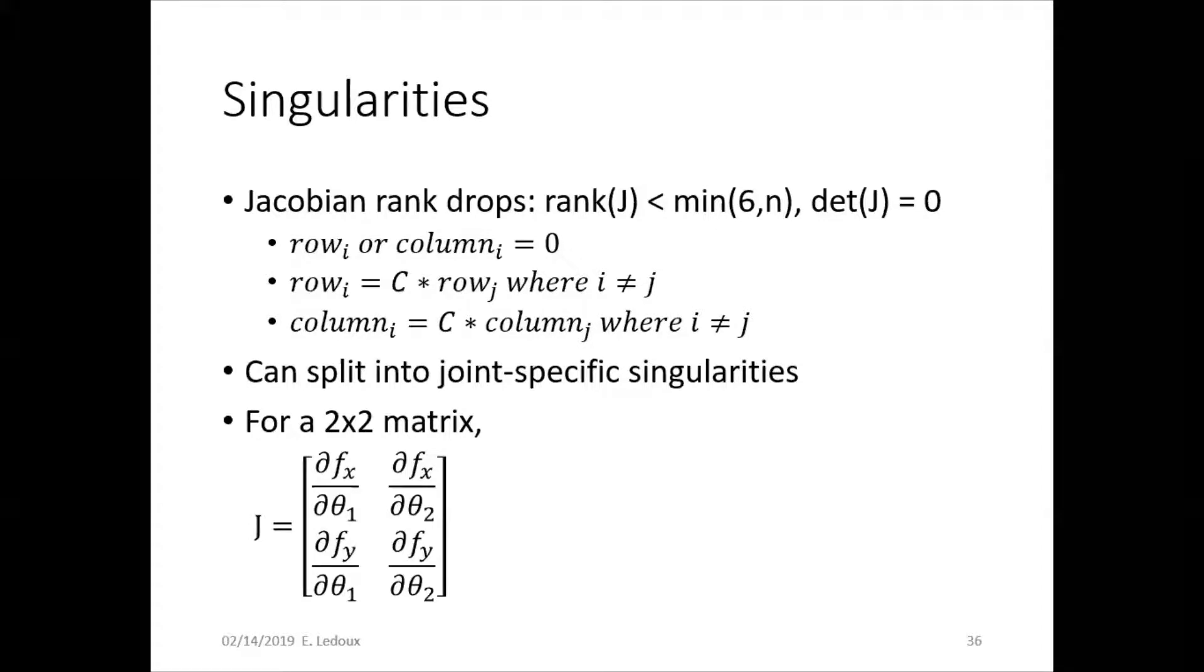At a singularity, the Jacobian rank drops. So the rank of J becomes less than the minimum of six or the number of joints, and the determinant of the Jacobian then goes to be zero because either a row or a column becomes zero, or a row or a column is a linear multiple of another row or column.